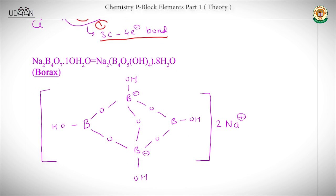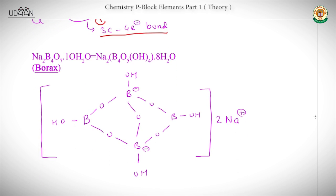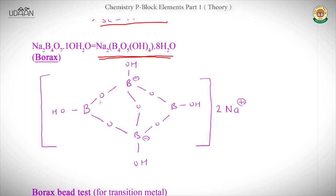Now move towards Borax, which is very important for JEE. Its formula is Na₂B₄O₇·10H₂O. Its structure contains 4 OH groups and 2 Na⁺ ions outside. The charge on the borate anion is 2⁻, balanced by the two sodium ions.